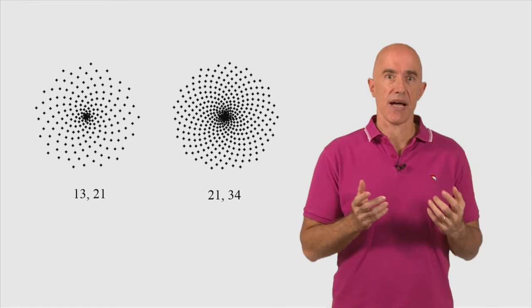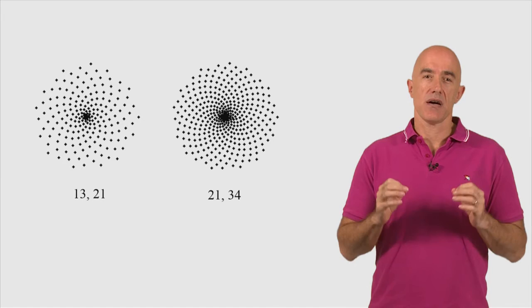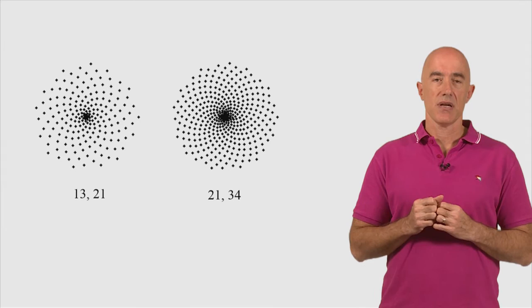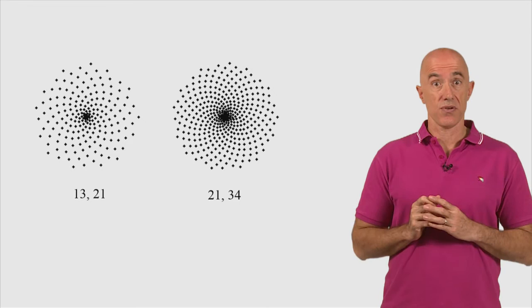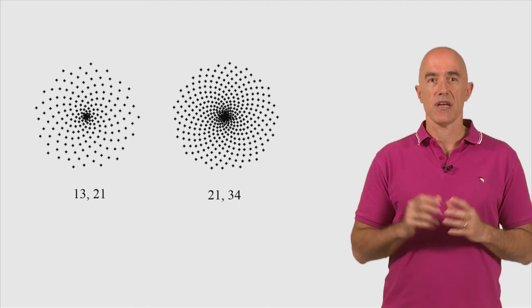Why do we get Fibonacci numbers? Because the golden angle, the rational approximations to the golden angle from the continued fraction are just the ratios of Fibonacci numbers. It's actually F sub n divided by F sub n plus 2. These form the rational approximations to the golden angle. So the denominator is a Fibonacci number. If the denominator is a Fibonacci number, then you see that number of spirals.